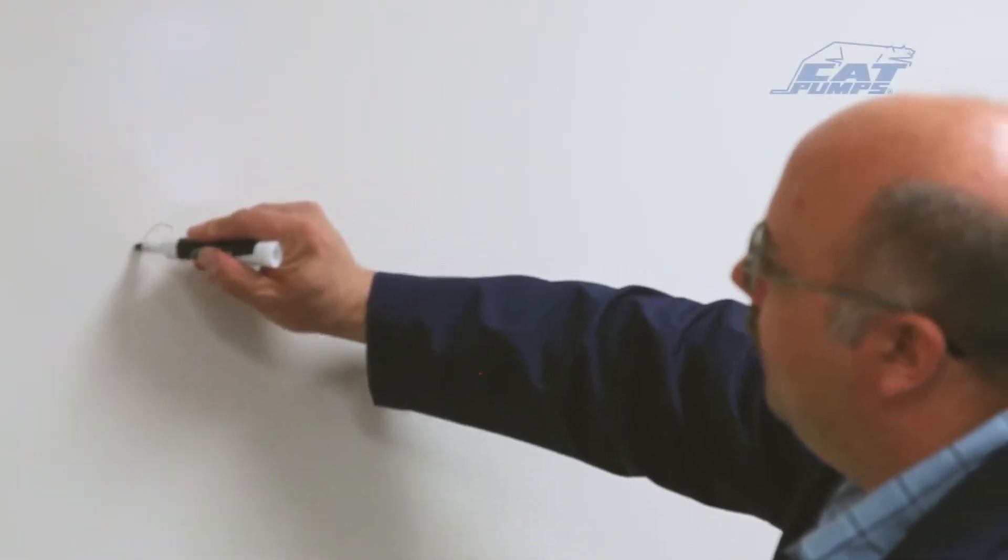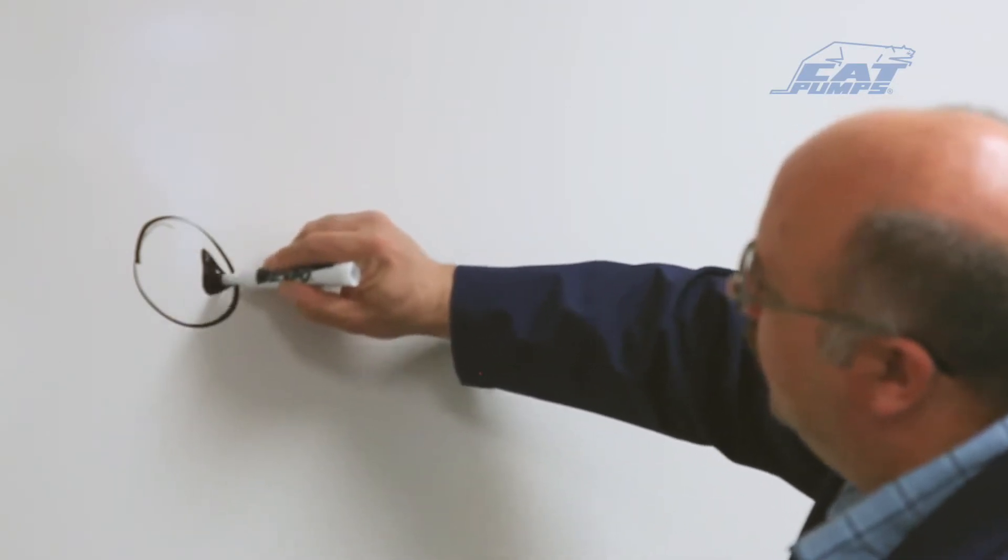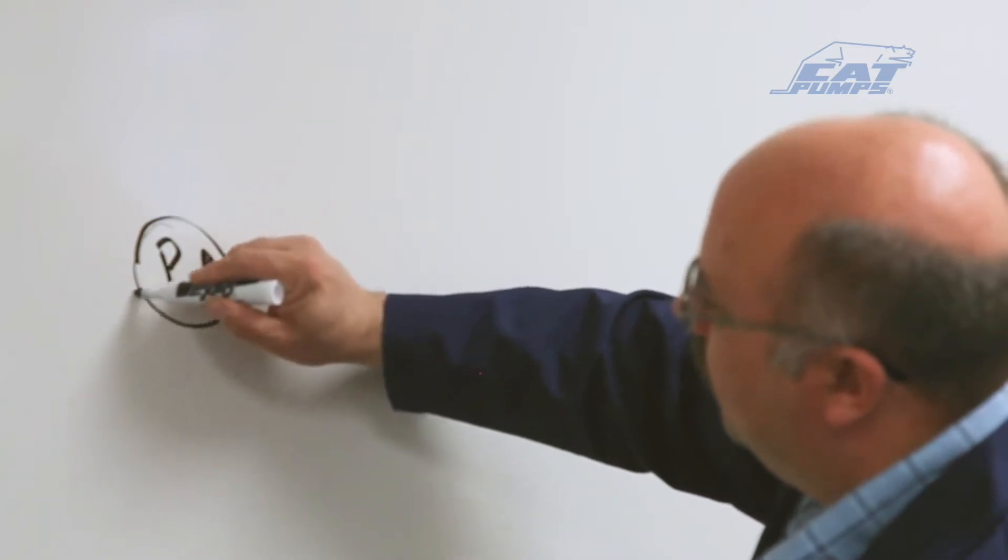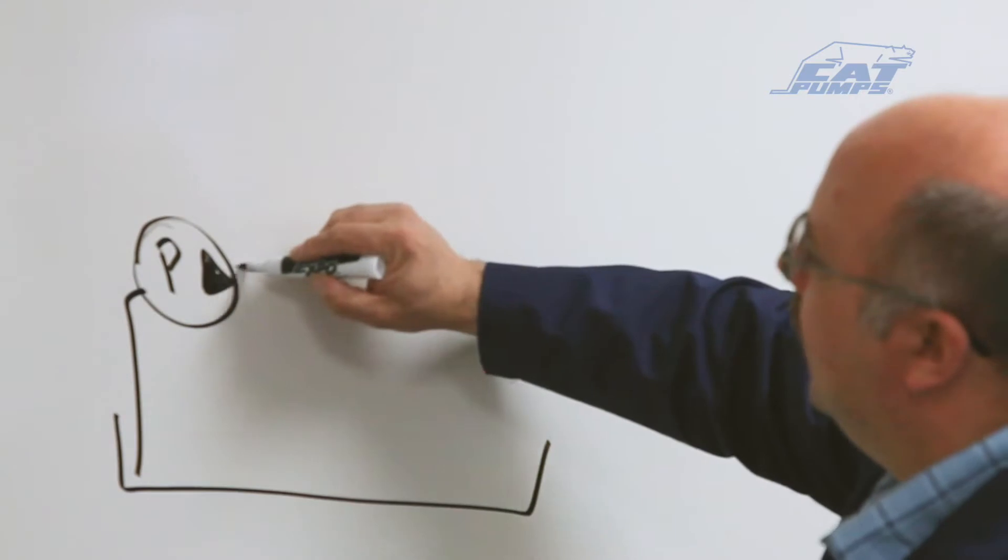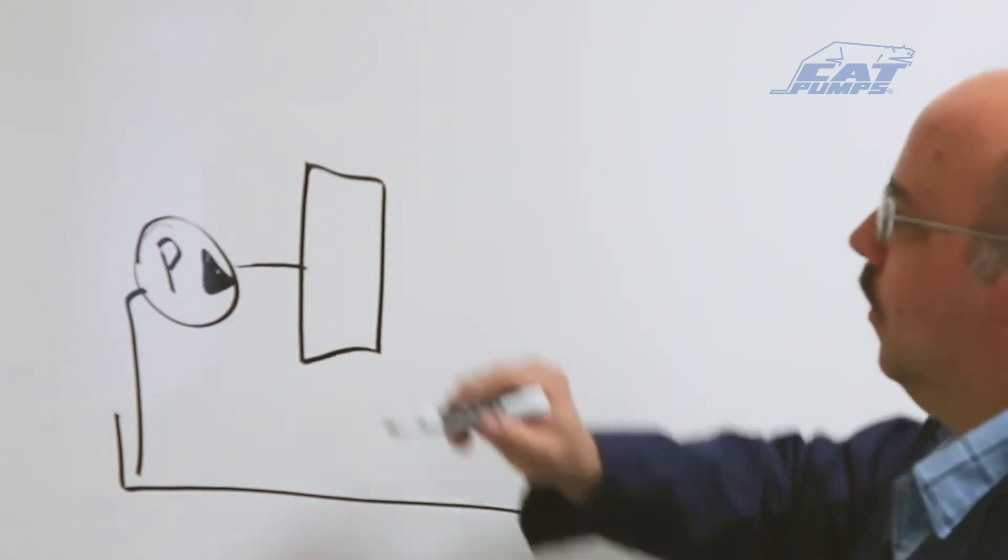Typically you'll have a high pressure water pump symbolized there. We'll put a P in there, and it draws water up out of a reservoir. Then it's usually connected to a pressure regulator device. Like that, we'll just draw a square.